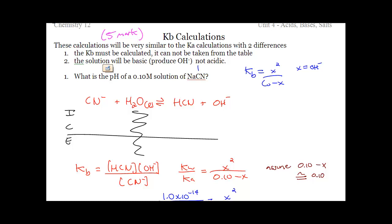When this question says 'what is the pH of a 0.1 molar solution of NaCN' — I'm even being more of a jerk by giving you a salt. Ignore the Na, and identify CN- as a weak base. Weak base makes OH-, so these aren't Ka questions, they're KB questions.